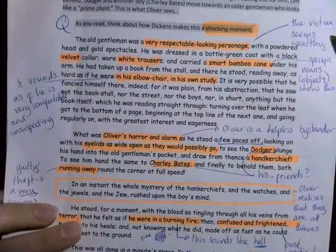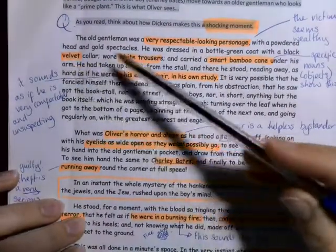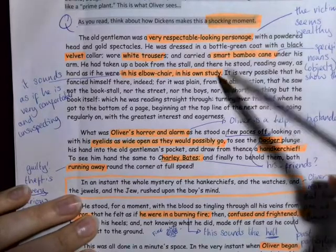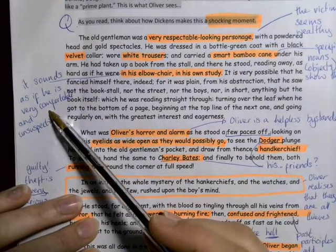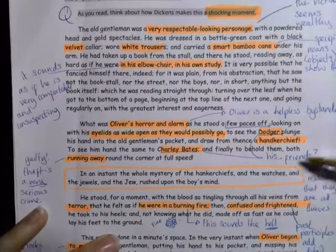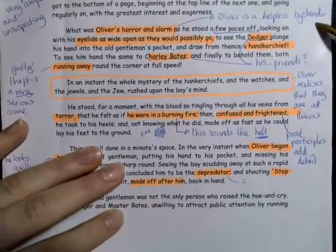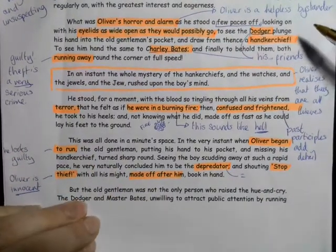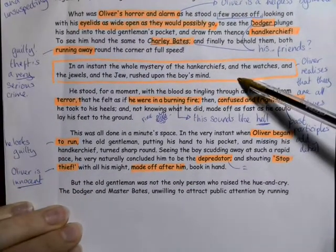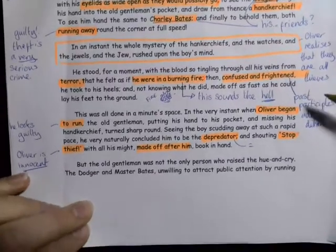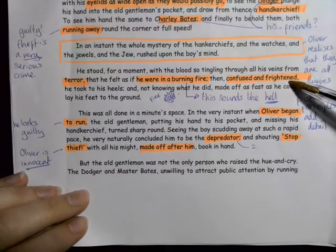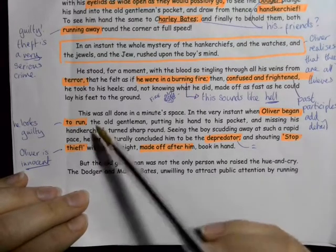Hopefully you'll have picked out lots of things that make it shocking. Some things like the victim seems very wealthy and respectable: velvet collar, white trousers, smart bamboo cane, probably owns his own study. The man is very comfortable and unsuspecting. You also notice that Oliver is a helpless bystander. What horror and alarm as he watches Dodger and Charlie Bates dip their hands into his pocket. Only here does Oliver apparently realize that they're all thieves.